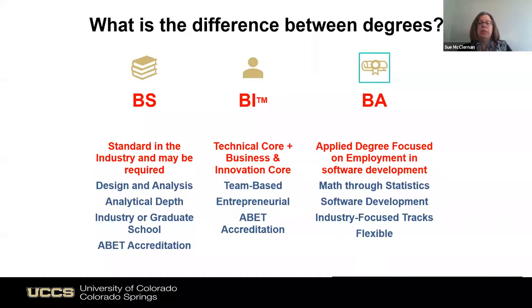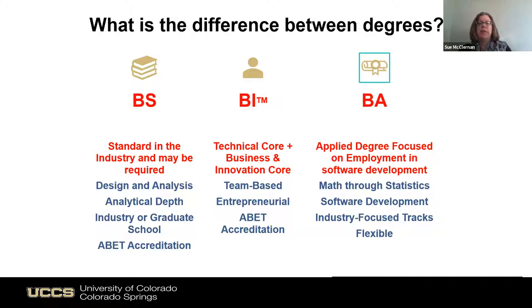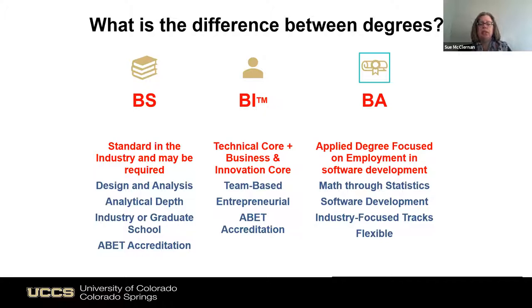We have three types of degrees in the College of Engineering and Applied Science: BS, BI, and BA. The Bachelor of Science is the industry standard for an engineering degree — all of our Bachelor of Science degrees are ABET accredited. The Bachelor of Innovation combines a technical core with a business innovation core — it's team-based and entrepreneurial, with some degrees ABET accredited. The Bachelor of Arts is our latest degree with expanded admission standards. If you aren't a fan of math, it teaches math through statistics and is focused on software development so you can get your degree and get into the world of work as quickly as possible.